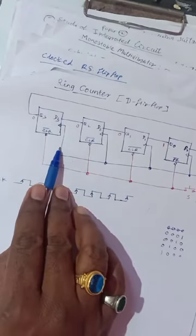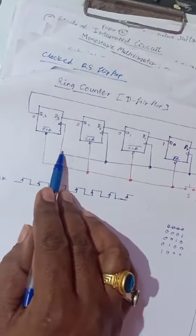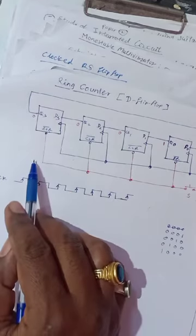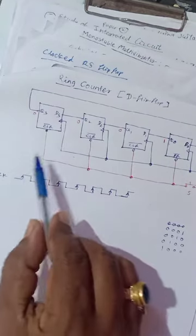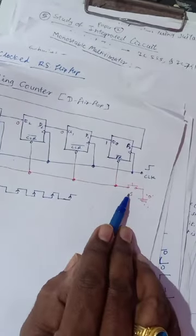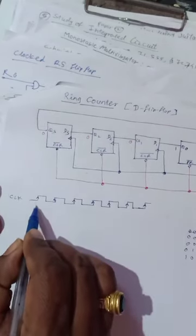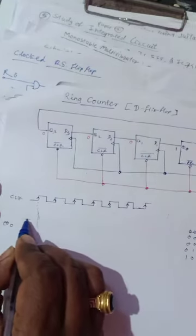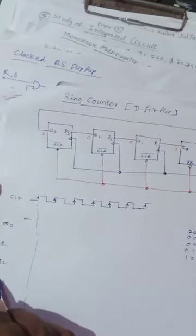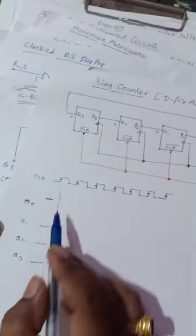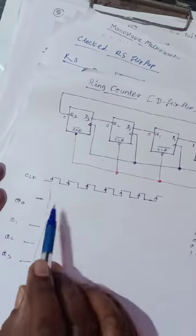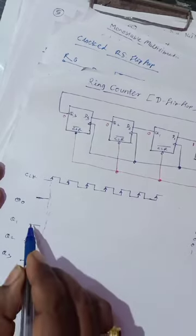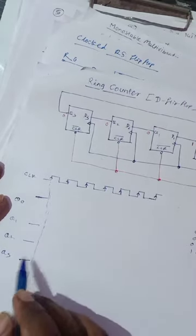Only this ring counter uses a positive-edge triggered clock. Other counters such as the up/down counter and the mod-10 or mod-16 binary counters all use negative-edge triggered clocks. But here we use a positive-edge triggered clock. Initially, after pressing and releasing the switch, Q0 is high and Q1, Q2, Q3 are low.